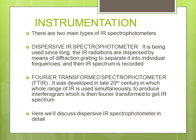The first type has been in use for a long time. In it, IR radiations are dispersed by means of a diffraction grating to separate them into individual frequencies, and in this way the IR spectrum is recorded. This type is called a dispersive IR spectrophotometer. The second type was developed in the late 20th century. In it, the whole region of IR is used simultaneously to produce an interferogram, which is then Fourier transformed to get the IR spectrum. This one is called the Fourier transform spectrophotometer, or FTIR.